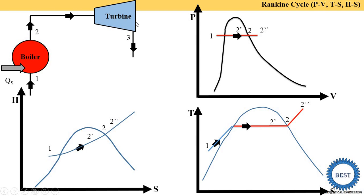After the boiler, steam is supplied to the turbine. Three types of steam are possible at the turbine inlet, corresponding to the three points on all diagrams: two-dash (wet), two (dry and saturated), and two-double-dash (superheated). In the turbine, process two to three is carried out.